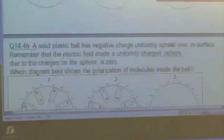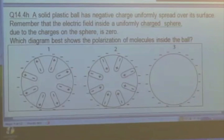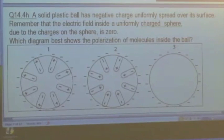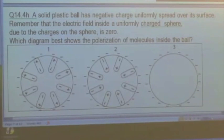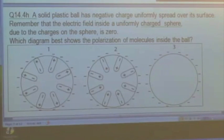What about this one? You have a solid plastic ball, and now you take a negative charge and spread it uniformly over the entire surface. Remember that the electric field inside a uniformly charged sphere due to charges on the sphere is zero. Which diagram best shows the polarization of the molecules inside the ball?